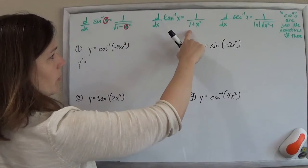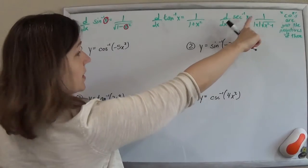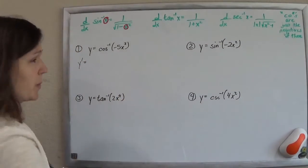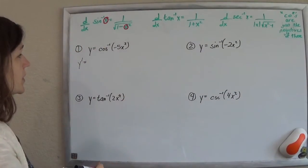Inverse cotangent, negative that. Inverse cosecant, negative that. So you don't have to memorize three new formulas if you know those.